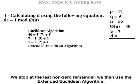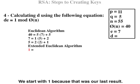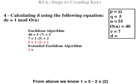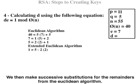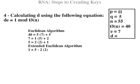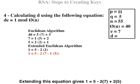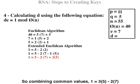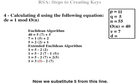We then use the extended Euclidean algorithm. We start with 1 because that was our last result. From above we know 1 equals 5 minus 2 times 2. We then make successive substitutions for the remainder. So we now substitute the 2 from this line. So 1 equals 5 minus 2 times (7 minus 1 times 5). Extending this equation gives 1 equals 5 minus 2 times 7 plus 2 times 5. So combining common values: 1 equals 3 times 5 minus 2 times 7. Now we substitute 5 from this line.